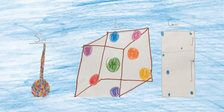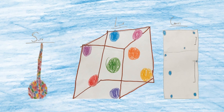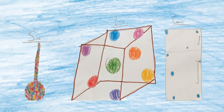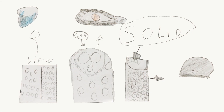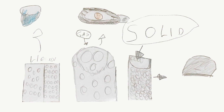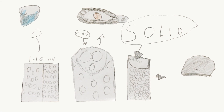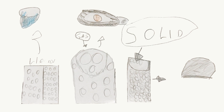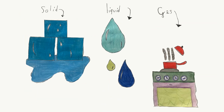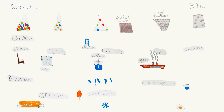Let's learn about solid, liquid and gas. Everything around us is made of matter. There are three states of matter: solid, liquid and gas. Matter is made of small particles.